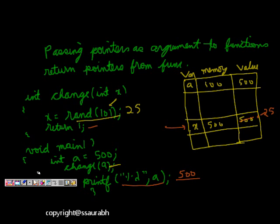If we want to make some corrections in this code, what we have to do is use pointers. So in this function change, if I do int star x, now it is a pointer. And then do star of x is equal to rand of 101. So now the changes will be reflected. Let's see now what happens.